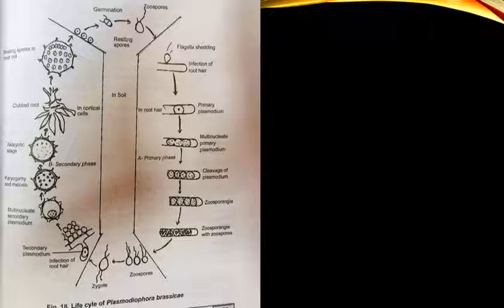Russia was devastated by club root disease, and scientists called for someone to identify the pathogen and develop management practices. Voronin came to Russia, studied the life cycle in detail, and named the pathogen Plasmodiophora brassicae — making a landmark contribution to plant pathology.